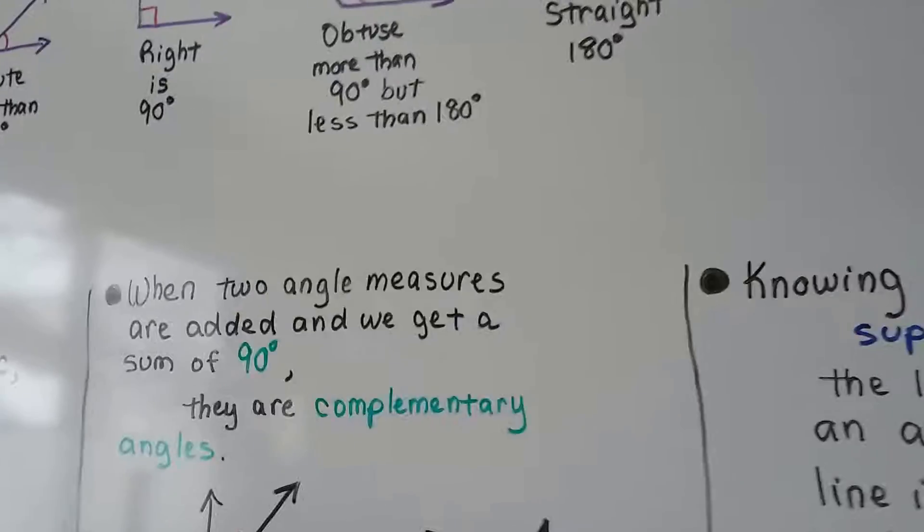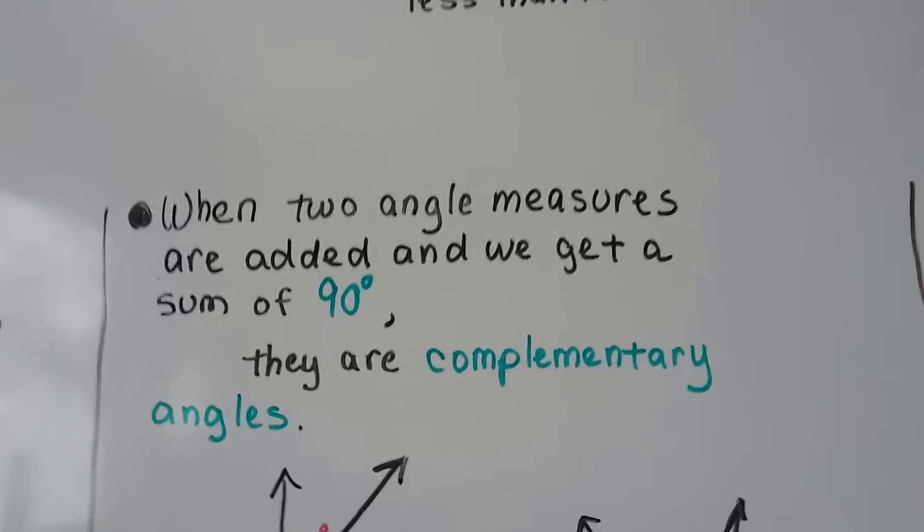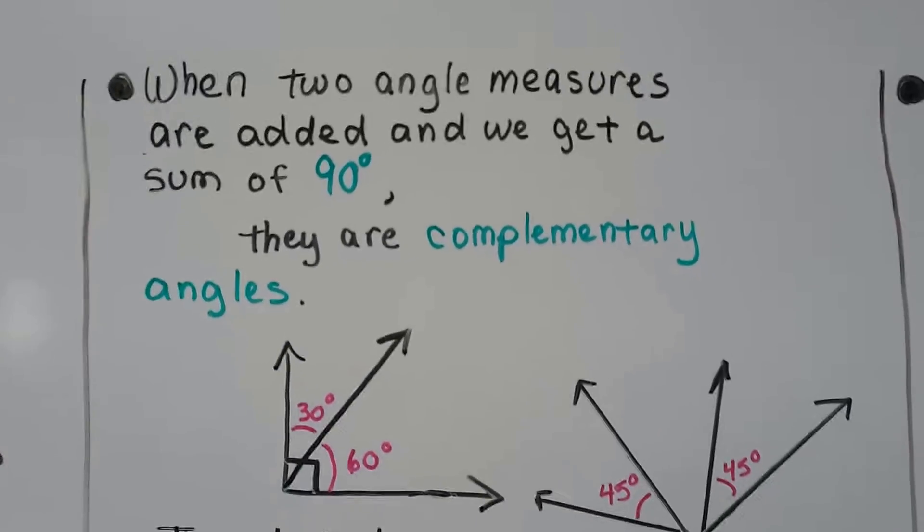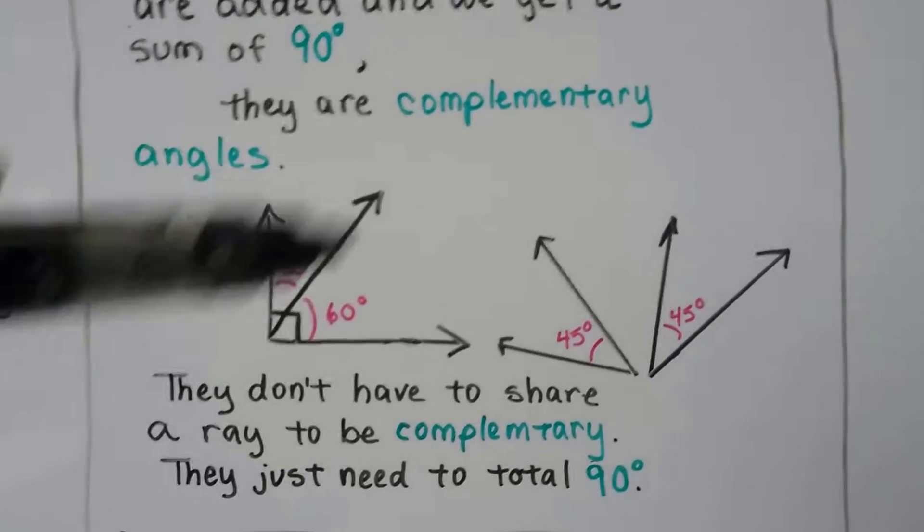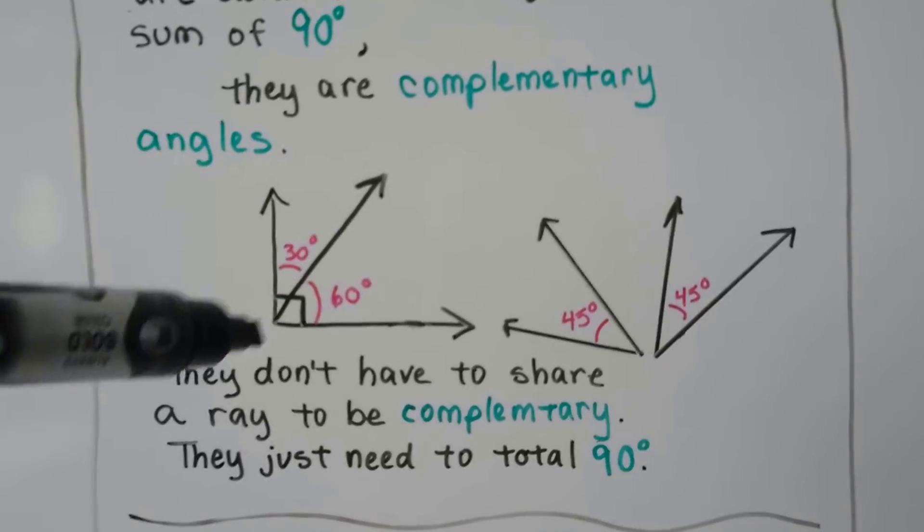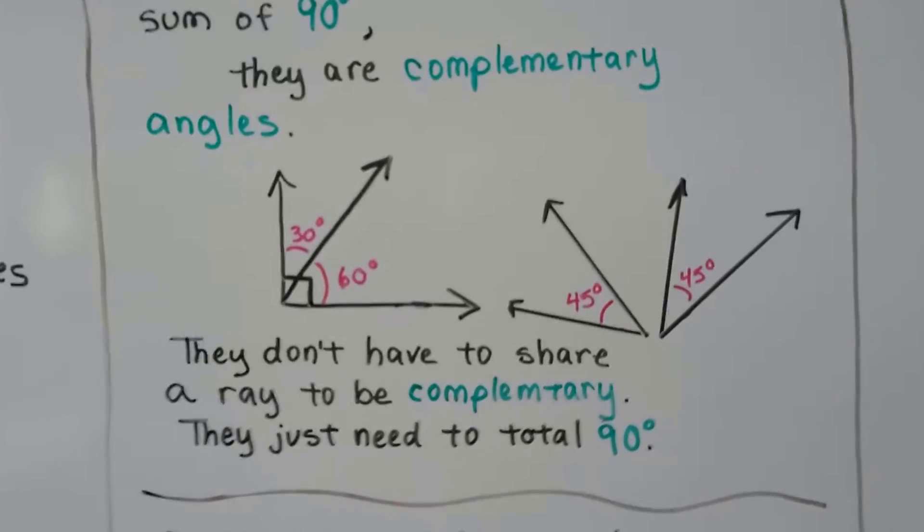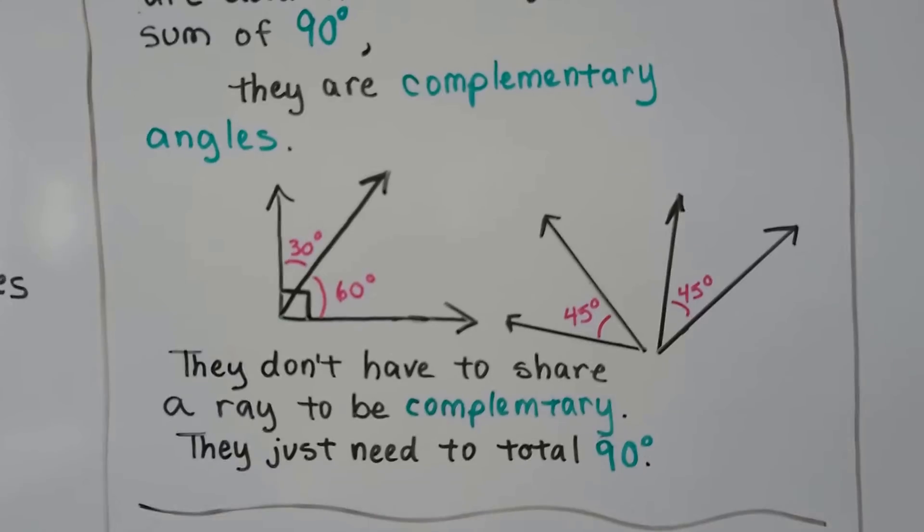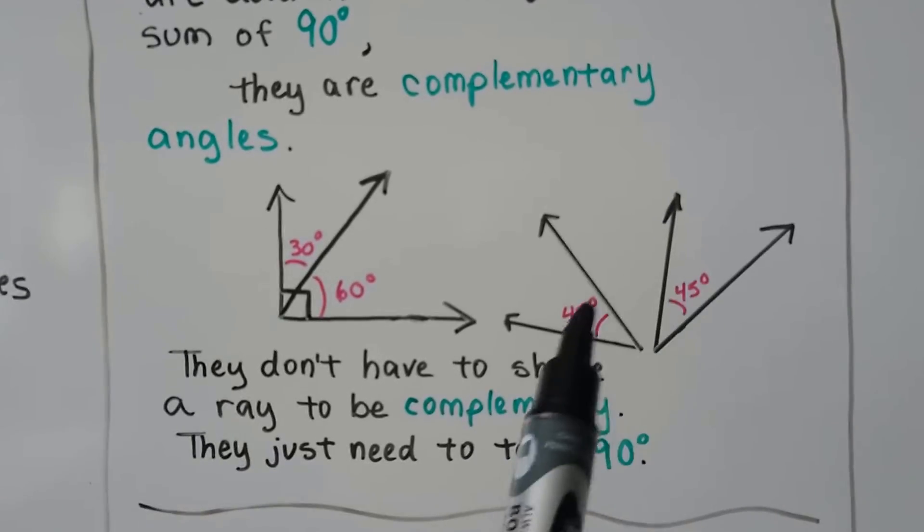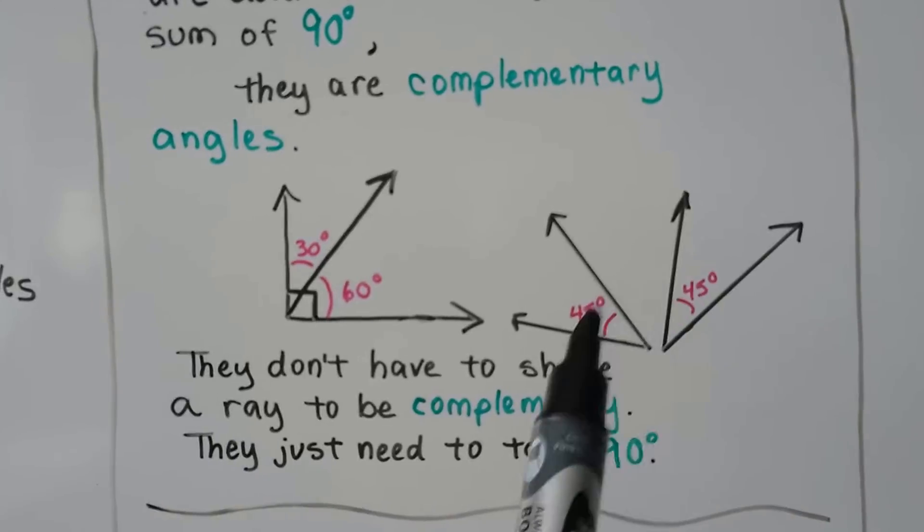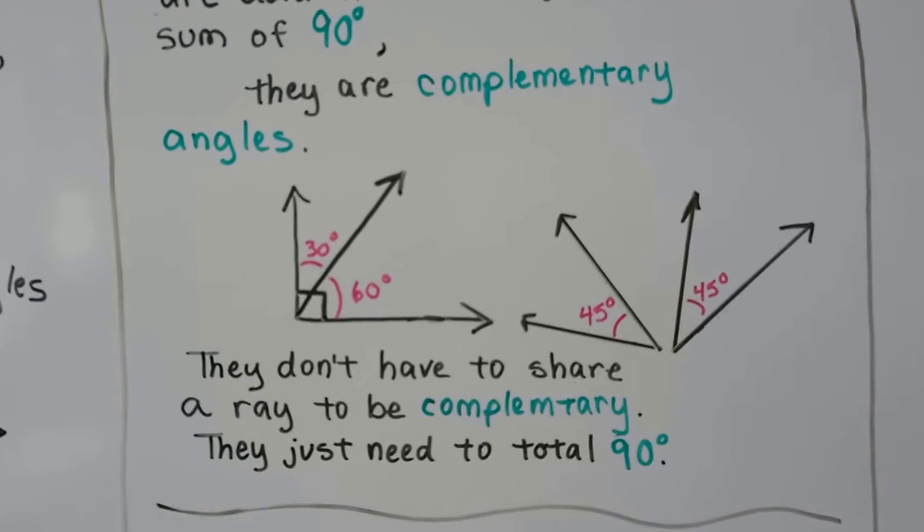When two angle measures are added and we get a sum of 90 degrees, they are complementary angles. And they don't have to share a ray. They don't have to be like that to be complementary. They just need to total 90 degrees. So these two angles aren't touching each other, but they're complementary because 45 and 45 makes 90.